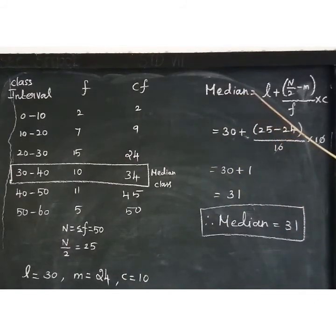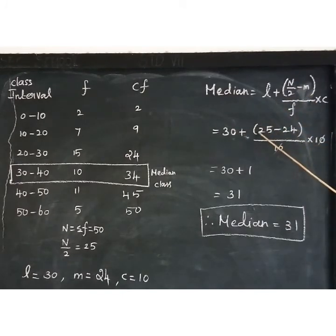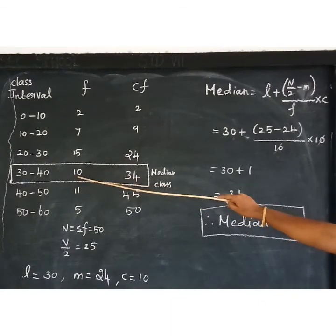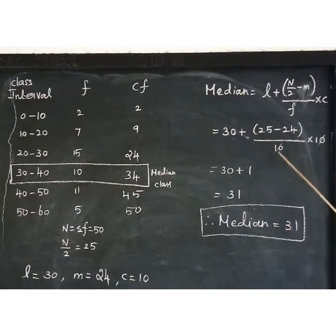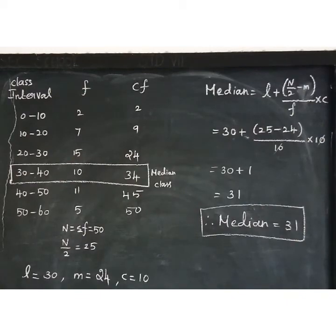The formula is: Median = L + (N/2 − M) / F × C. L is 30, N/2 is 25, M is 24, F is 10 (frequency of the median class), and C is 10 (width of class interval). Cancelling, 25 minus 24 is 1, so 30 plus 1 equals 31. Therefore, the median value for this sum is 31.